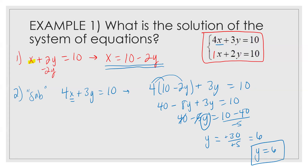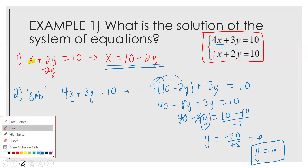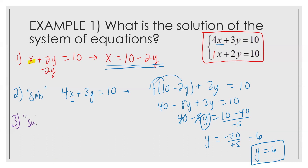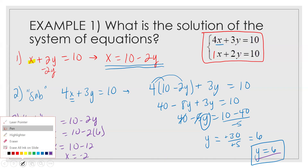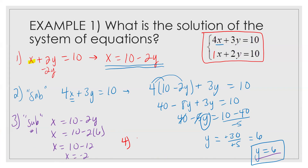Now we're going to do our second substitution — step three. We know y equals 6, so we substitute it back into step one. We had x equals 10 minus 2y. Now we know y is 6, so x equals 10 minus 2 times 6, which is 10 minus 12, which is negative 2. So our solution set is negative 2 comma 6, because x equals negative 2 and y equals 6.